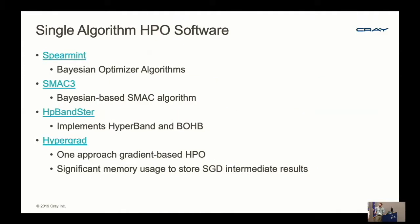There are also some single-algorithm HPO softwares. Spearmint has some Bayesian optimizers. SMAC3 is a Bayesian-based SMAC algorithm. HPBandster implements Hyperband and BOHB—I believe that's the implementation from the publication. And HyperGrad is one of the gradient-based HPOs, which has a memory usage trade-off for storing stochastic gradient descent intermediate results. It's kind of just a research toy at this point, but it'll be cool to see that mature.